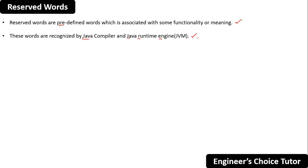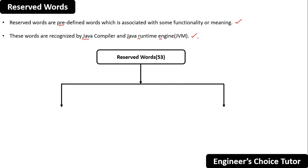We have 53 reserved words in Java, and they are divided into two categories: keywords, of which there are 50, and reserved literals, of which there are three.